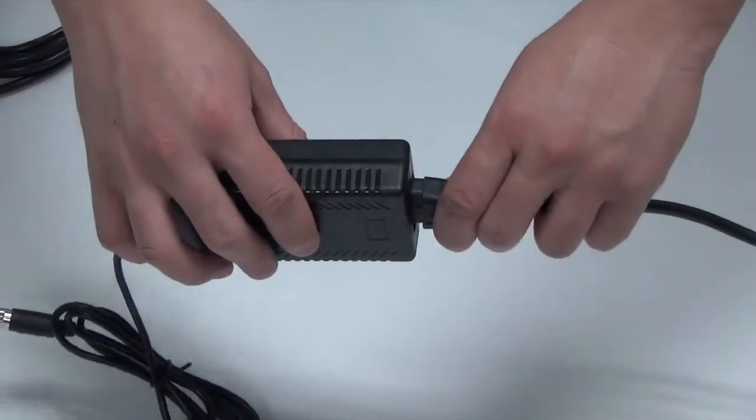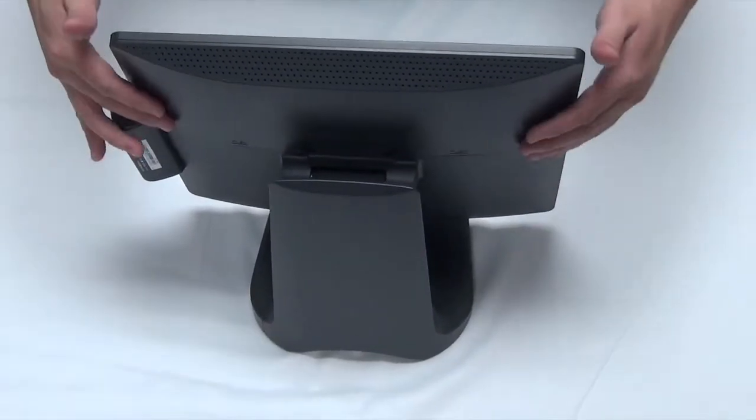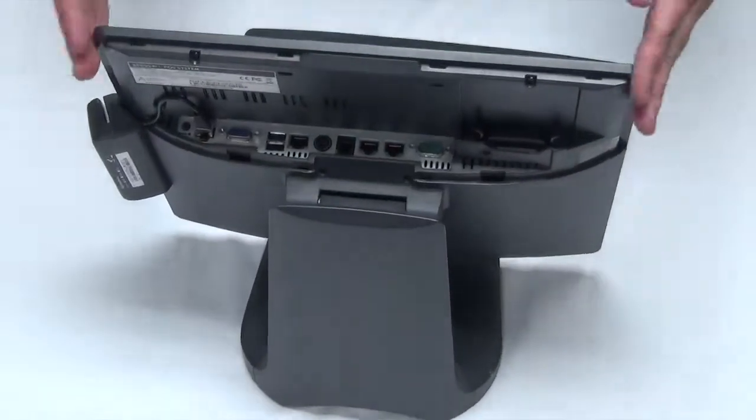Step 4. Set up station. Prepare the power cord. Using two hands, push the back to open the covers.